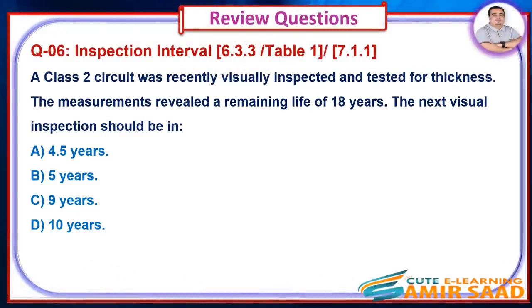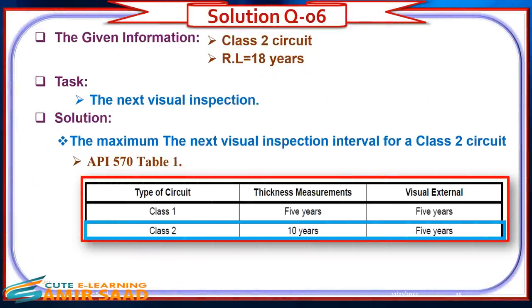Question 6: A Class 2 circuit was recently visually inspected and tested for thickness. Measurements revealed a remaining life of 18 years. When should the next visual inspection occur? Solution: The maximum next visual inspection interval for a Class 2 circuit is determined from API 570 Table 1. The answer is B: 5 years.